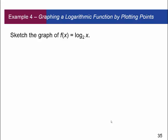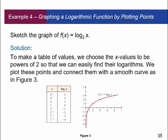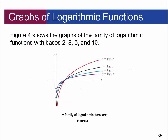Let's sketch the graph of f of x equal to log base 2 of x. Make a table of values choosing x values as powers of 2, so that we can easily find their logarithms. For example, 2 to the third is 8, so log base 2 of 8 is 3. When x equals 1, the log is 0. Plotting these points gives a nice smooth curve. Figure 4 shows the graphs of a family of log functions of different bases — the lower the base, the quicker it shoots up.